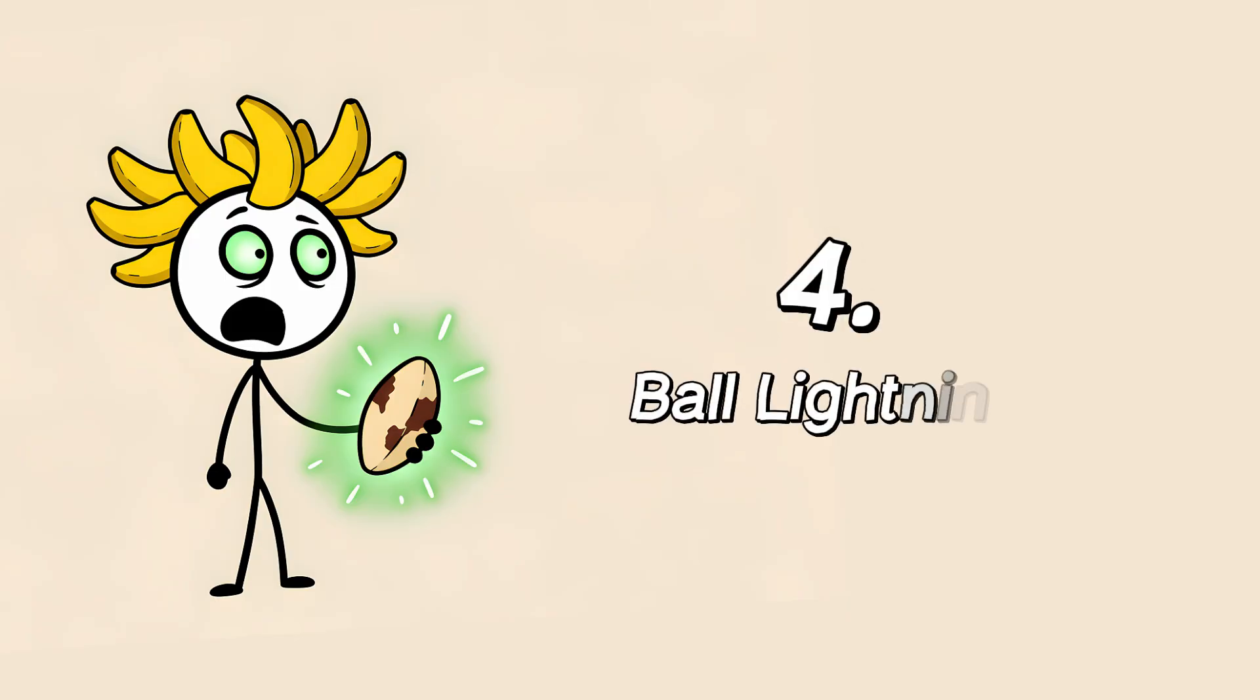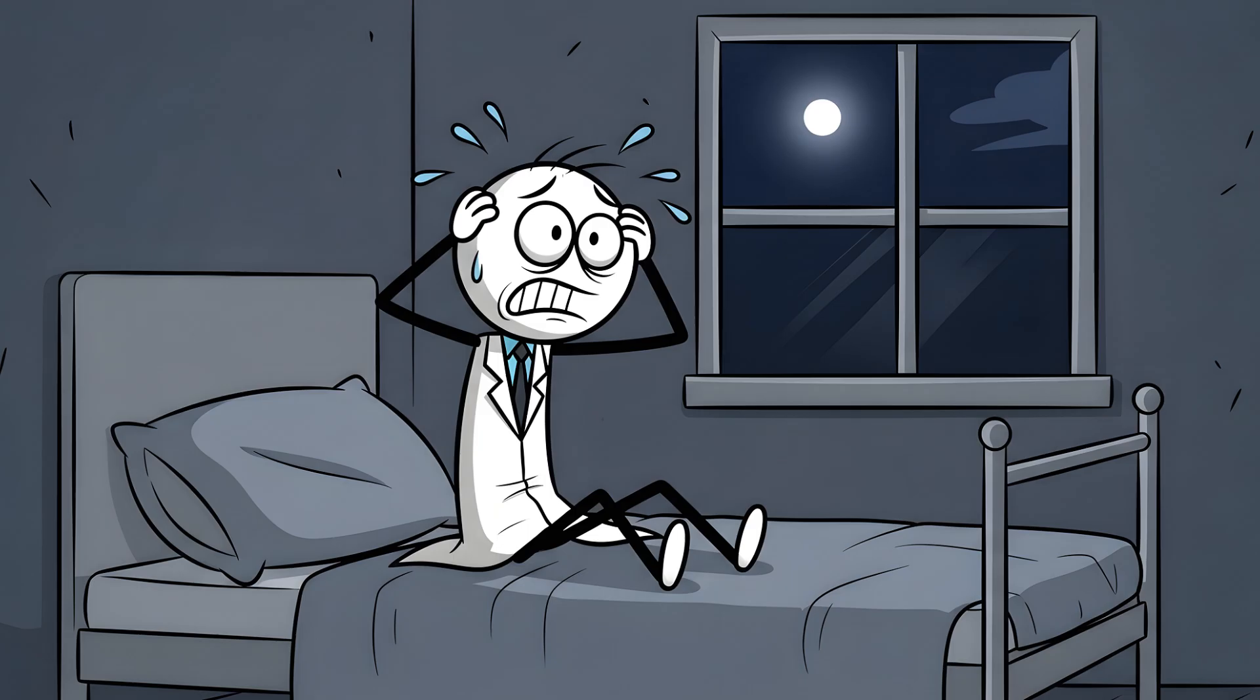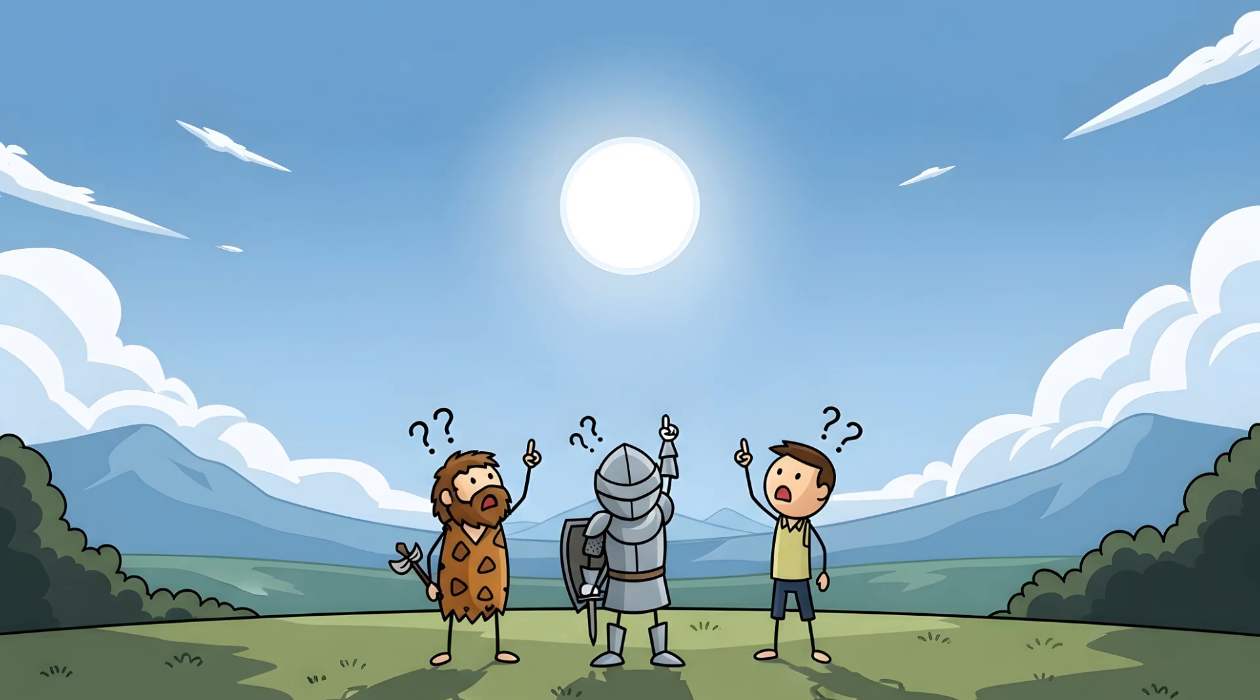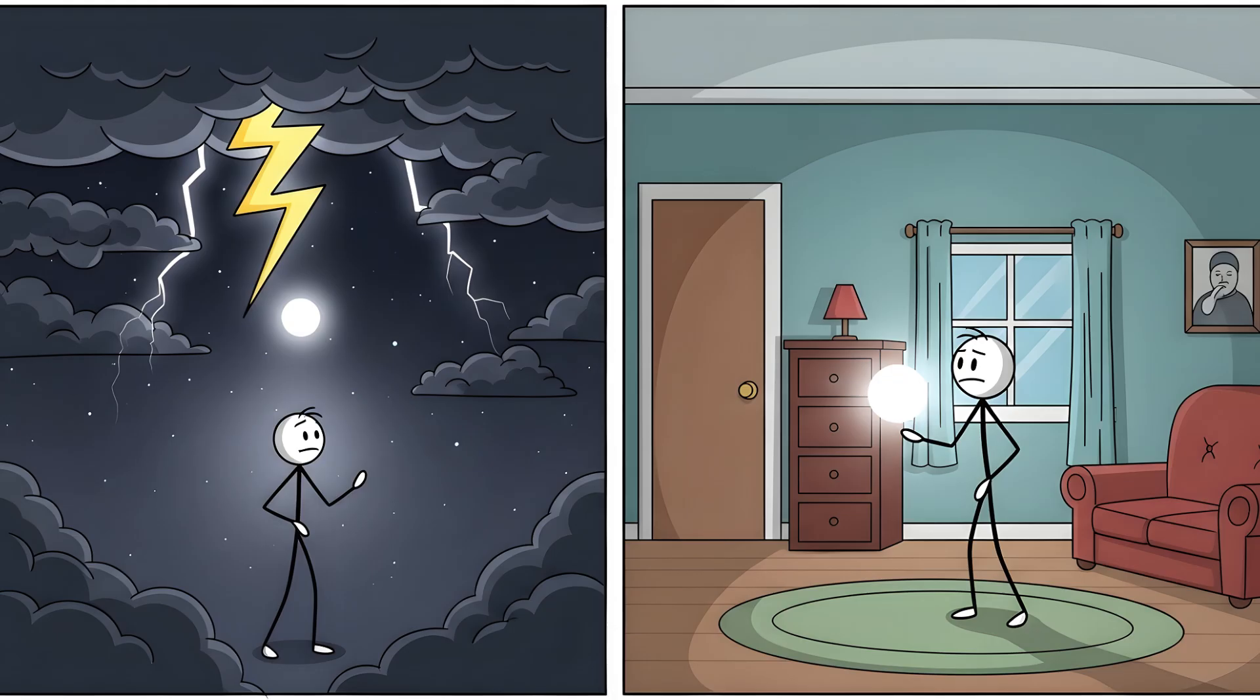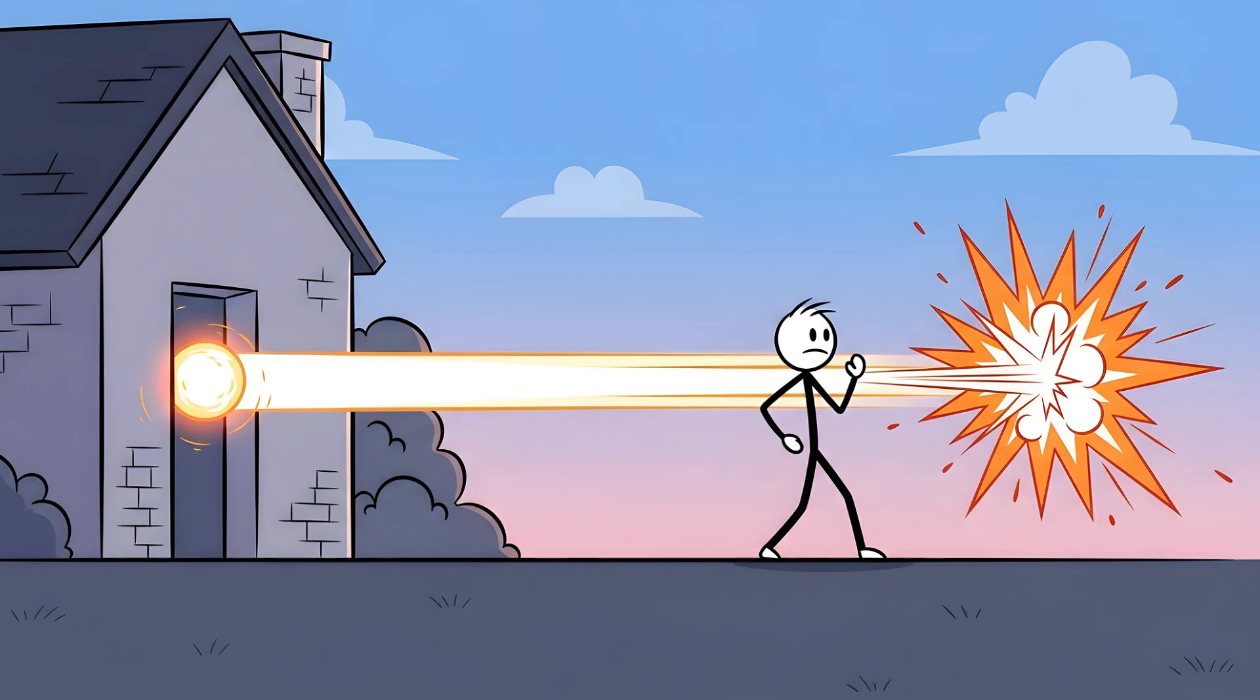Number four, ball lightning. Of all the atmospheric glitches, this is the one that still gives scientists night sweats. For centuries, people have reported seeing it, a glowing, hovering sphere of light, anywhere from the size of a golf ball to a beach ball. It appears during thunderstorms, sometimes floating down from the sky, other times materializing out of thin air inside a house. It drifts silently through rooms, passes through walls, and then vanishes, sometimes quietly, and sometimes with a deafening bang.